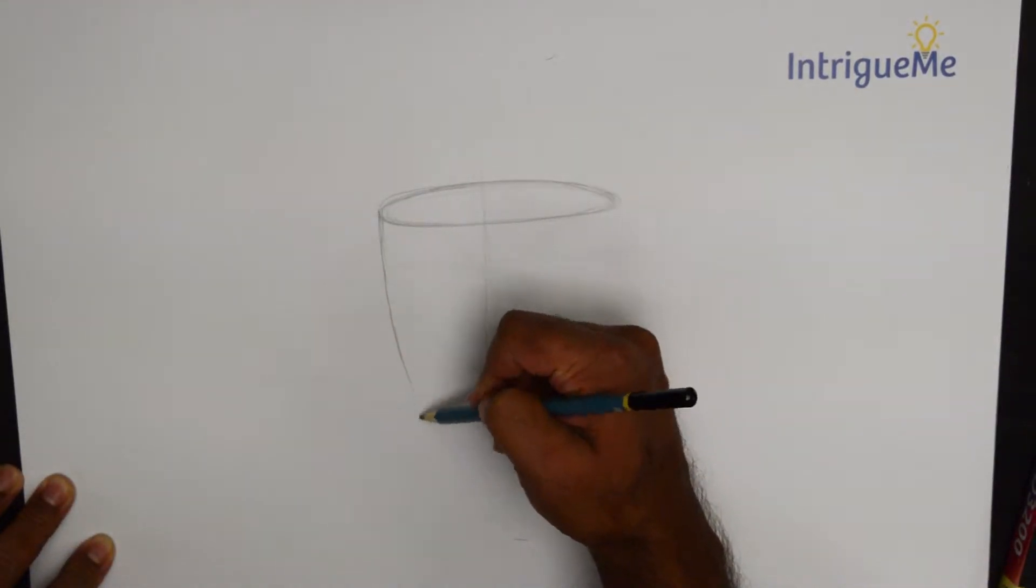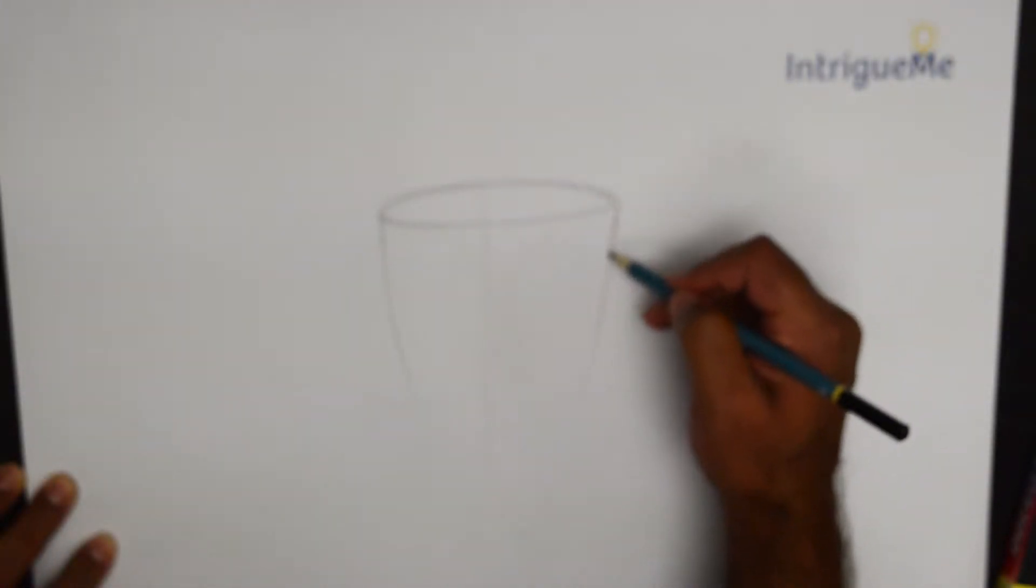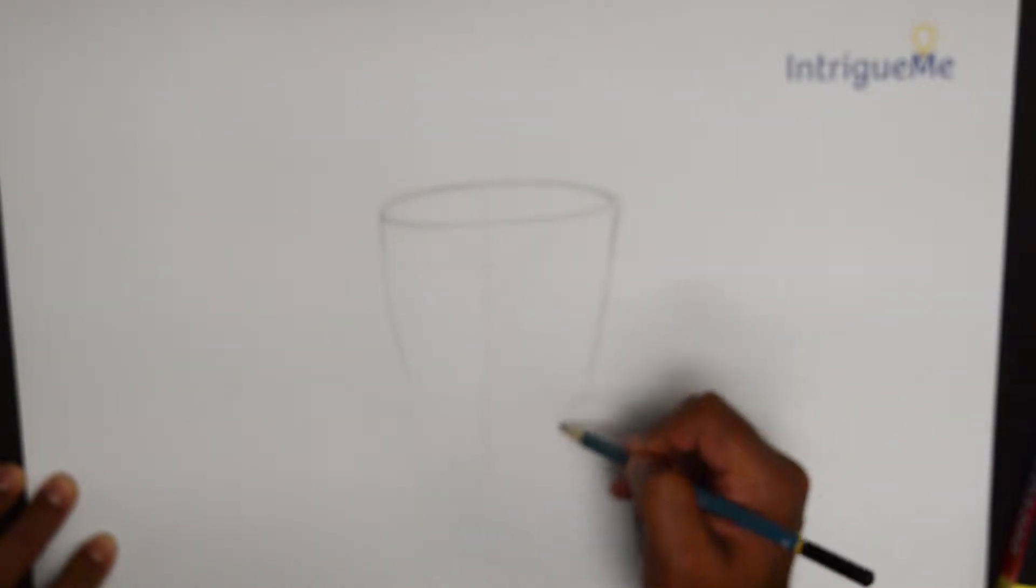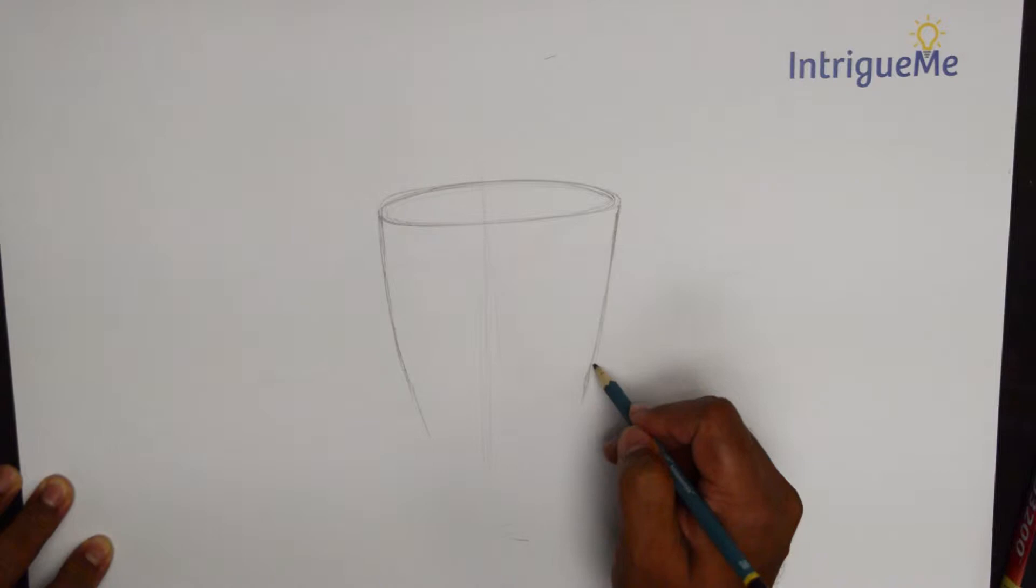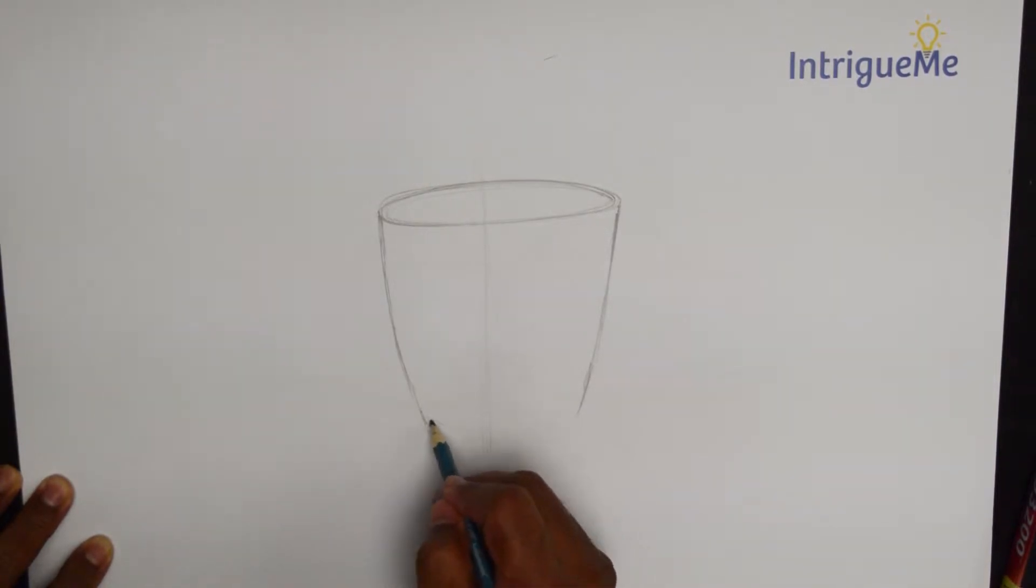So let's go down on either side. So as you notice I'm just going like this, and like that. Just that much is fine. And then another arc. And let's give it a base as well.